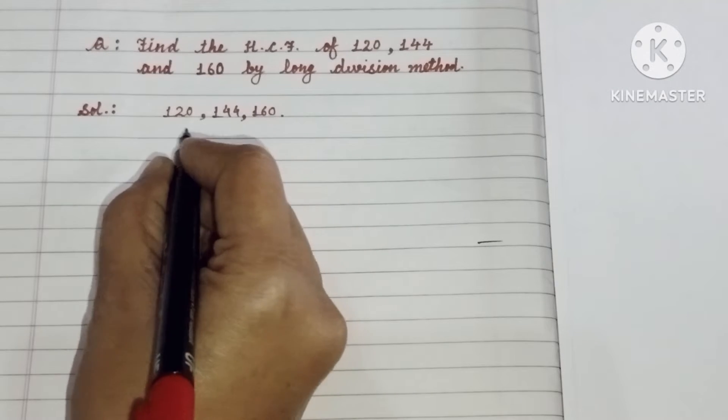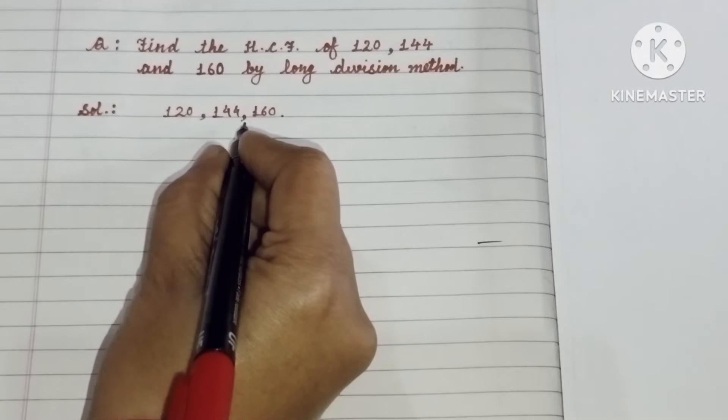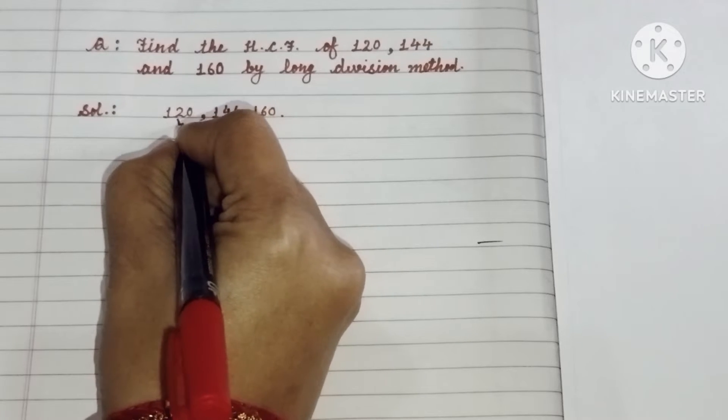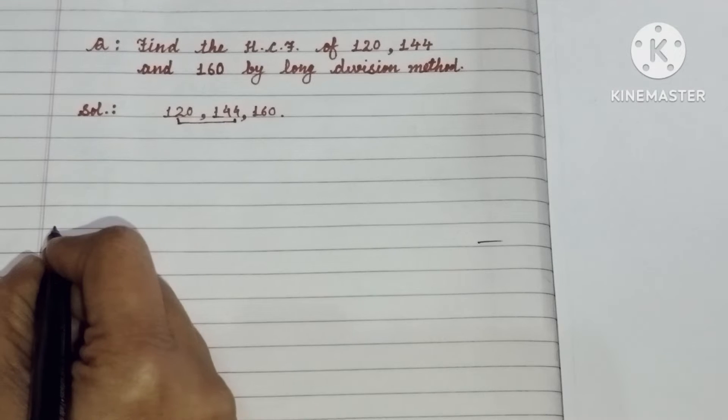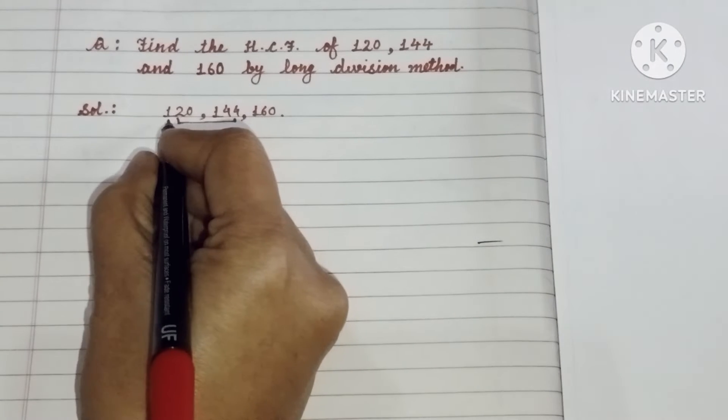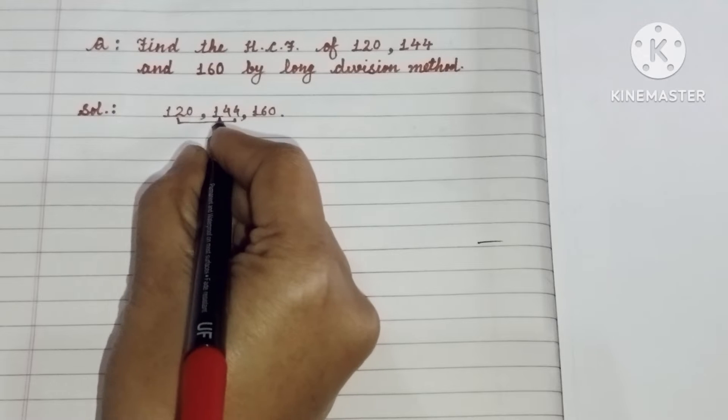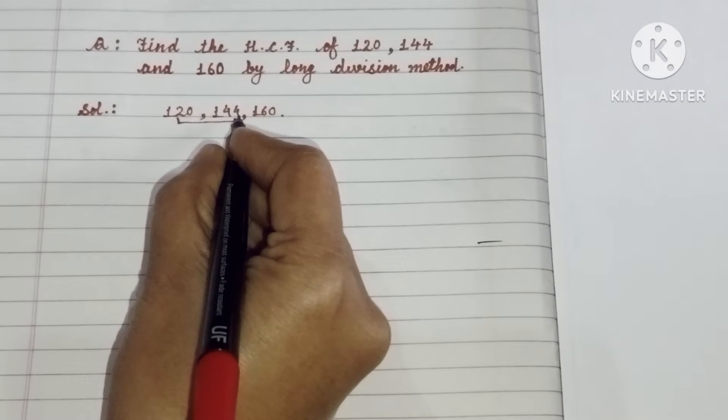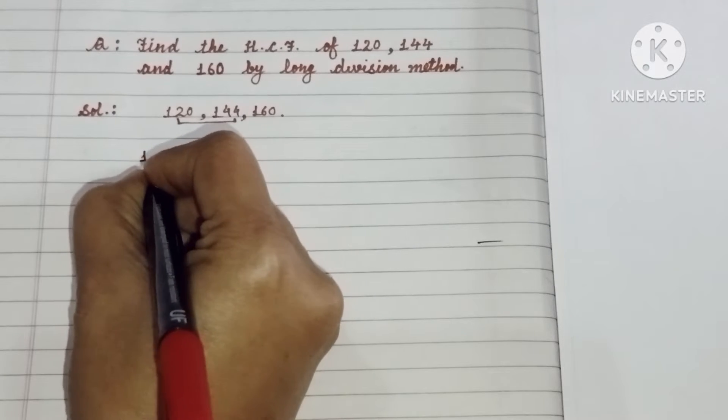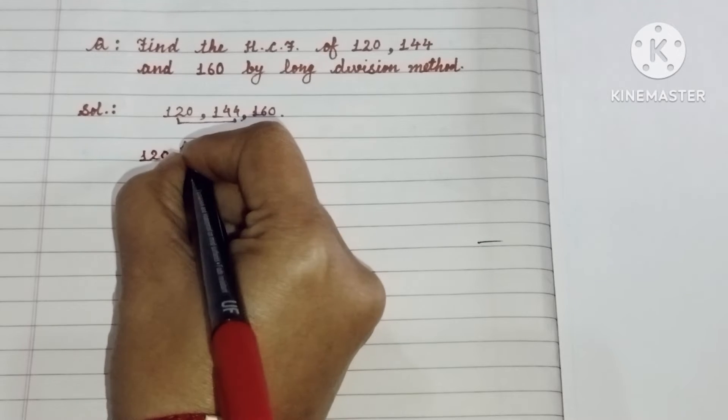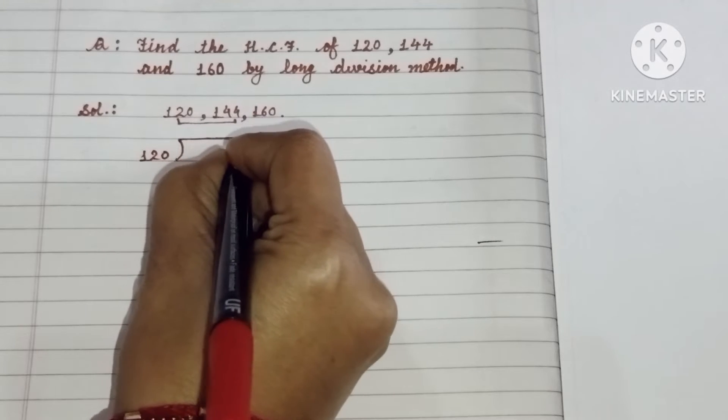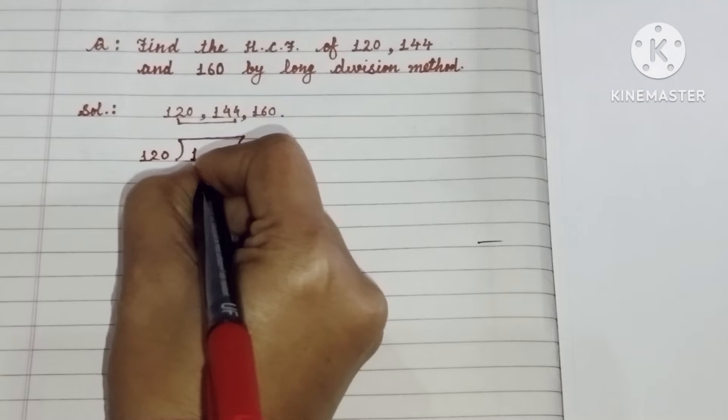Firstly, we have to find the HCF of any two numbers. So take any two numbers as we are taking number 120 and 144. Now among 120 and 144, 120 is the smallest number and 144 is the greatest number. So take the smallest number as divisor and greatest number as dividend.